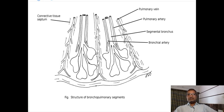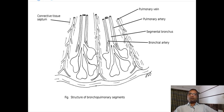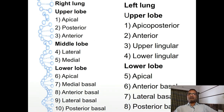These bronchopulmonary segments are separated by septa. In this connective tissue septum present between bronchopulmonary segments - in these areolar septa - there is presence of pulmonary vein. Therefore pulmonary vein is intersegmental in drainage, but the tertiary bronchus and pulmonary artery are segmental in distribution.